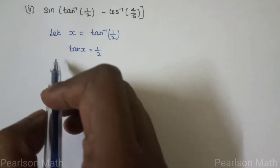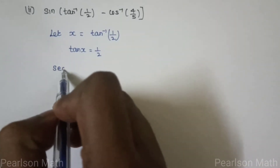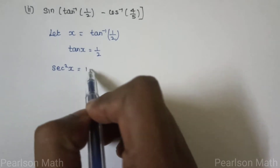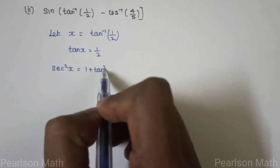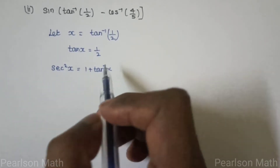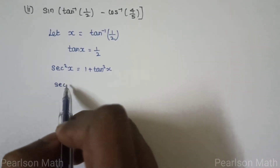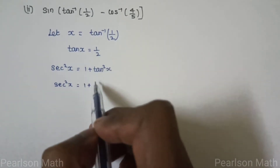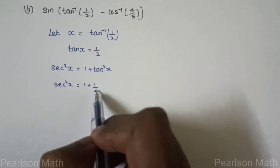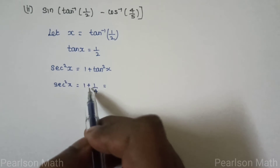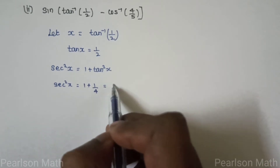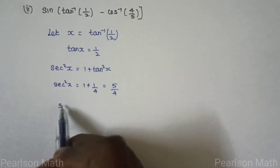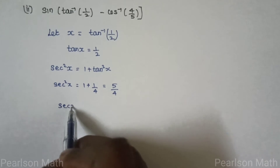Now apply the identity formula: sec squared x equals 1 plus tan squared x. Substituting tan x equals 1/2, we get sec squared x equals 1 plus 1/4, which gives 4 plus 1 over 4, so sec squared x equals 5 by 4.